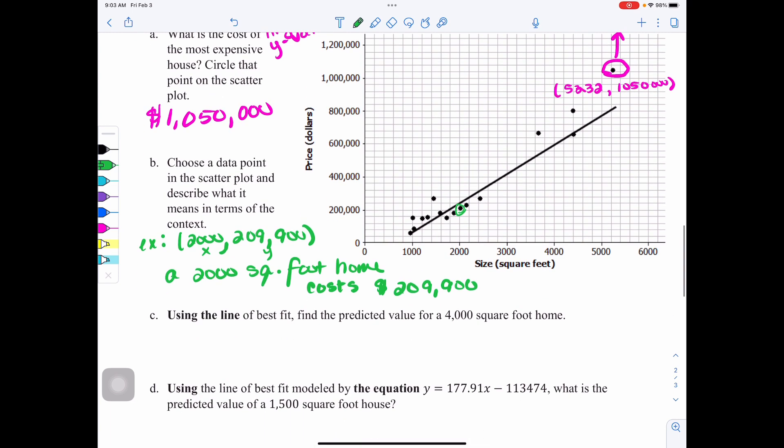Now, using the line of best fit, we're going to find the predicted value for a 4,000 square foot home. But the trick with this one is they want us to use the line, not the equation. If I'm using the line, I'm going to find 4,000. I'm going to follow it up and see where it hits the line. It hits a little bit below 600,000. So I'm going to make an approximation of approximately 590,000. That's from me just using the line of best fit to make my prediction.